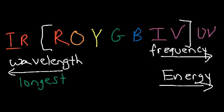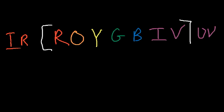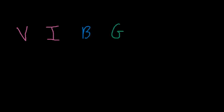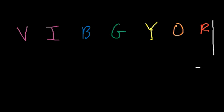Now you can answer questions related to frequency, energy, and wavelength in the visible light spectrum. You may also need to know the specific values. The visible light spectrum ranges from 400 nanometers to about 700 nanometers. Writing the colors in order of increasing wavelength: violet, indigo, blue, green, yellow, orange, red — with red at 700 nanometers.